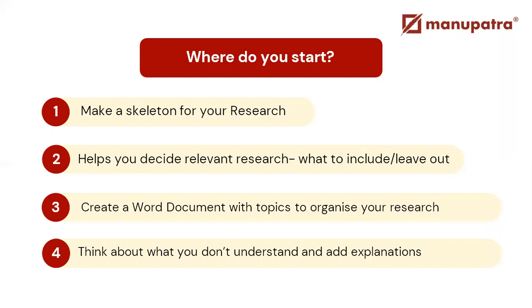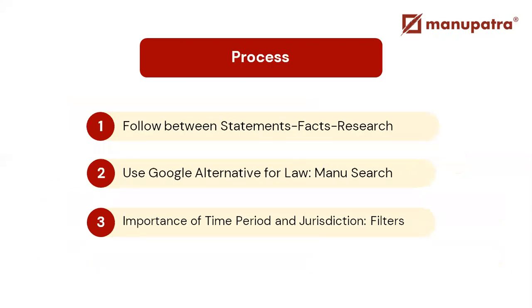Third, create a word document with topics to organize your research. Take the skeleton you've made and paste it into the document. Every time you come across something relevant, you know which section of the research paper it's supposed to go into — paste that research there. This helps you organize very fast. Once you've done all this research, if there are areas where you don't understand something, add the explanations in the document itself so that when you start writing, there's already some form of written content with you.